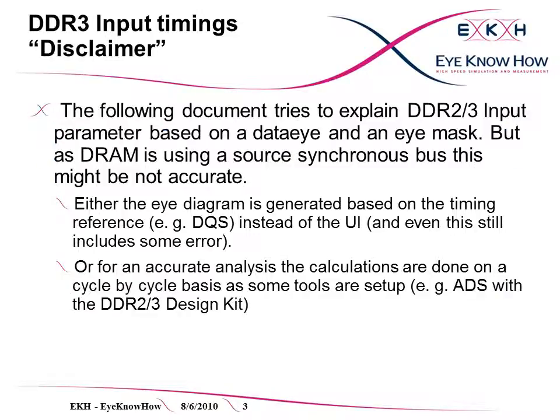First, I would like to make a short disclaimer. For simplicity, this tutorial tries to explain DDR2 and DDR3 input timings based on a data eye and an eye mask. This allows data evaluation on a simple eye diagram. But as DRAMs are asynchronous, this is not really correct. The eye diagram could be generated based on the timing reference — for example the DQS instead of the unit interval — but even this does not solve the problem completely. The same can be achieved by adding the DQS uncertainty in the mask or in the timing budget calculation.